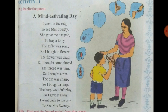So, the harp is found in the village. The pin — what is it? It is sharp (nukili). So she gives it back and buys a harp — the harp is like a veena (stringed instrument). The harp wouldn't play, it doesn't sound, so she gives it back too. And at last, she goes back to the city and meets Mrs. Sweetie (Shrimati Shwiti).